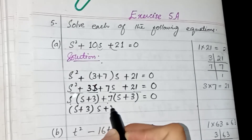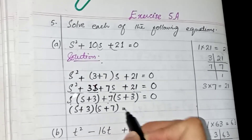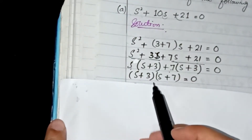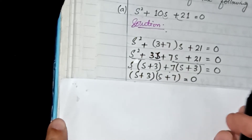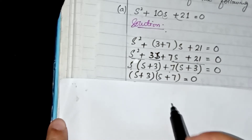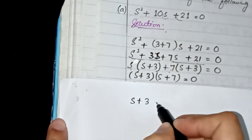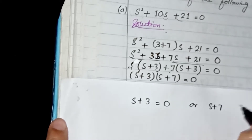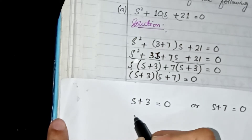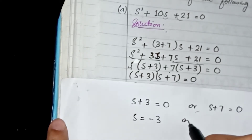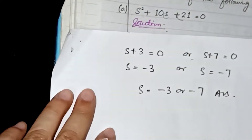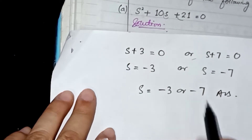The same bracket gives our first factor and the other factor is made with the remaining terms: s plus 3 and s plus 7 are our two factors. By applying the zero product property, we equate both with 0: s plus 3 equals 0 or s plus 7 equals 0. Solving these, s equals minus 3 or s equals minus 7. So our answer is s equals minus 3 or minus 7.